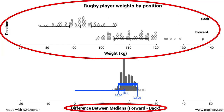Underneath that we've got a new graph, and if I look at the label on the axis, it's talking about the difference between the medians. So when I'm comparing my backs and my forwards weights, it's looking at the median weight of the forwards — which is here at about 112 kilograms — comparing that with the median weight of the backs at around 93 or 94 kilograms.